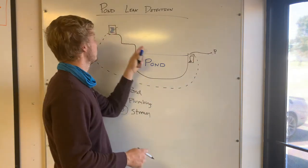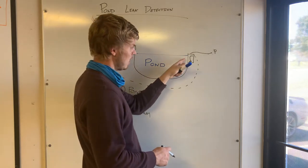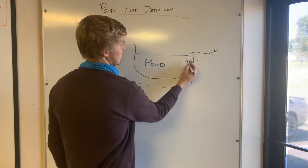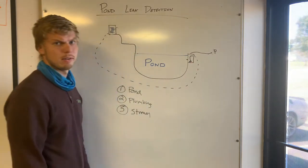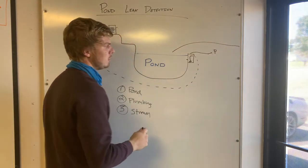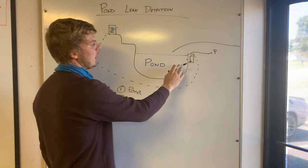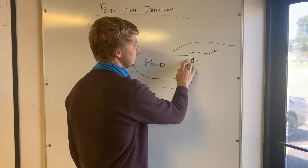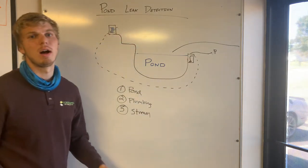So say you unplug it, all the water drains out and the water level is low, it's still like right there. Then what we're going to need you to do is to take a garden hose and just fill up the pond to its normal operating height.